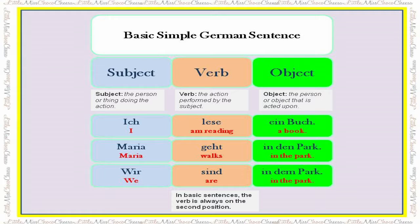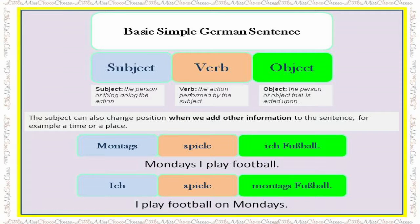The third sentence is 'wir sind in dem Park' — we are in the park. Notice that the article here is different from the sentence before because we are already inside the park. In basic sentences, the verb is always in the second position. The subject can also change position when we add other information, such as a time or place: 'montags spiele ich Fußball' or 'ich spiele montags Fußball', both meaning 'I play football on Mondays'.